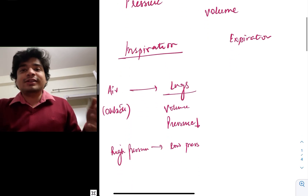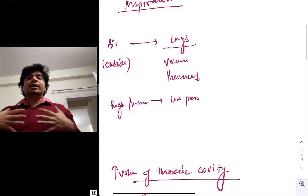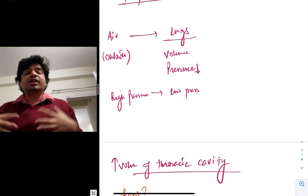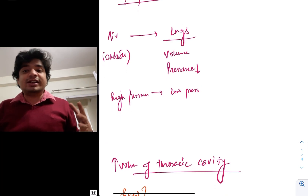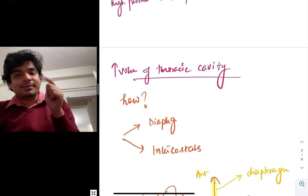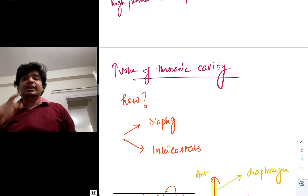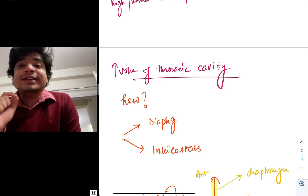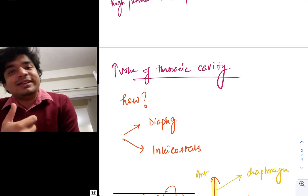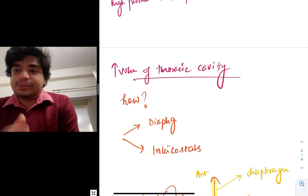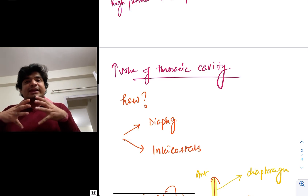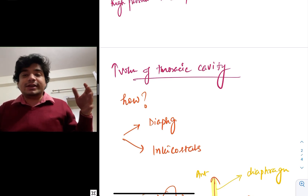How do we increase the volume of the lungs? The chest cavity will expand, and it does so with the help of two muscles. One is the diaphragm, and the second is between the ribs — something called intercostal muscles. There are external intercostal and internal intercostal muscles, and both intercostals along with the diaphragm help in increasing the volume of the thoracic cavity.